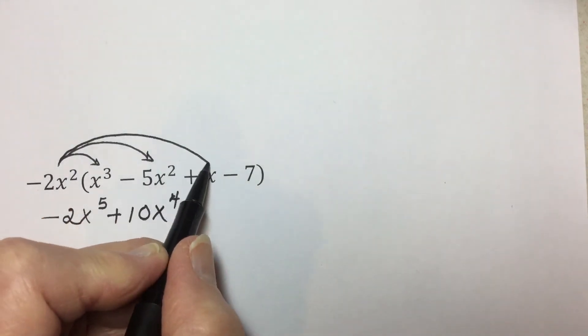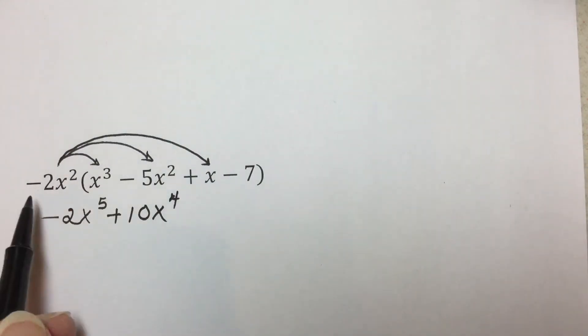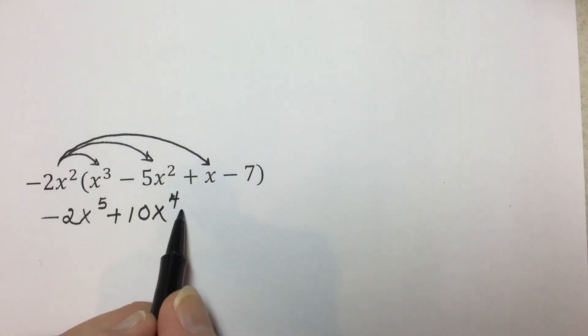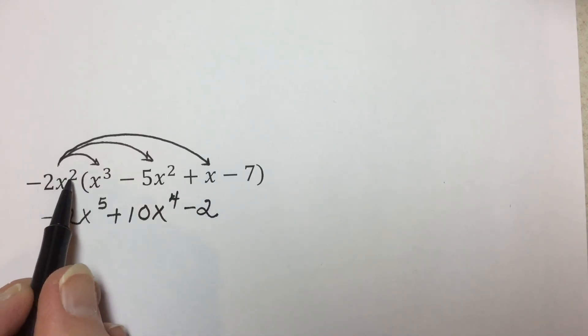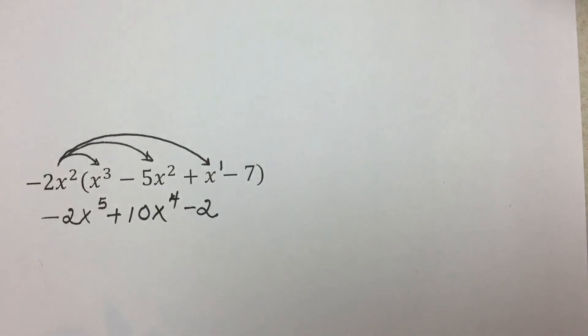Multiplying the monomial times the third term, a negative two times the coefficient of one is negative two. Common bases, x to the second times x to the first. We add exponents together for an x to the third.